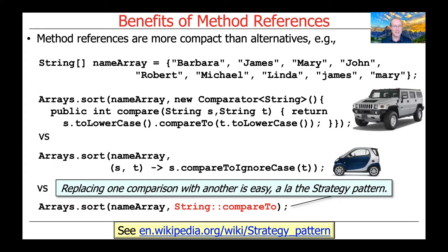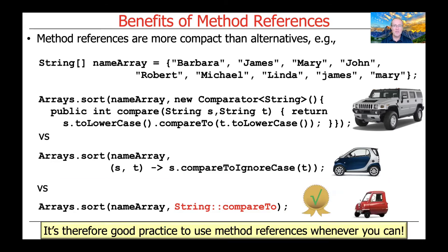You can think of this as a variant of the strategy pattern from the Gang of Four book — very much like the form of strategy used with C++ and the standard template library, a la functors. Therefore, it's a good practice whenever possible to use method references, especially replacing lambda expressions with very concise and compact method references. Modern IDEs like IntelliJ and Eclipse will automatically convert your lambda expressions or anonymous inner classes to method references when you can make that conversion.